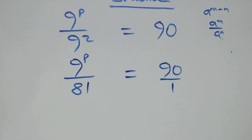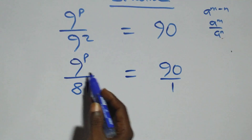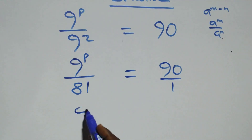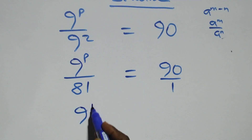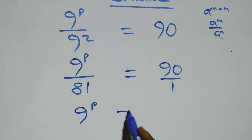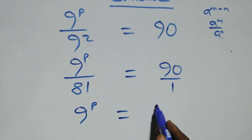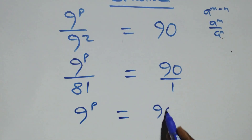The next step here we cross multiply. 9 raised to power p equals to 90 times 81.